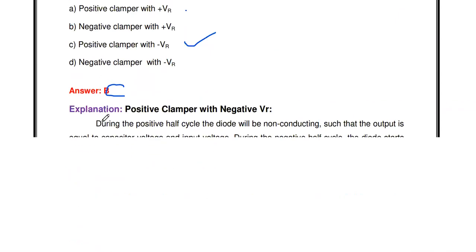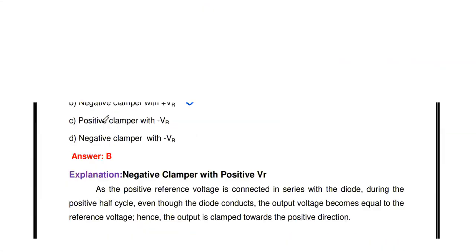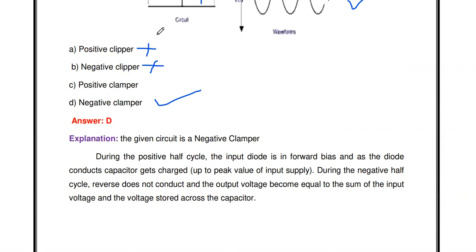These are the different types of clamper circuits. The clamper is one of the important applications of the P-N junction diode, similar to the clipper. Thanks for watching — please subscribe for more videos. Links for Electronic Circuits, Signals and Systems, Digital Signal Processing, and Antenna MCQ playlists are in the description box.